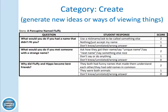Category create — generate new ideas or ways of viewing things. From A Porcupine Named Fluffy. What would you do if you had a name that didn't fit you? I would use a nickname or ask to be called something else — that's a two. If they say nothing or just accept my name, that's a one. What would you do if you met someone with a strange name? Ask how they got their name, say unique name, or say something nice — any of those qualify for a two; don't say or do anything is a one. Why did Fluffy and Hippo become friends? They both had funny names and it made them understand each other — that's a two; they were both animals is only a one.